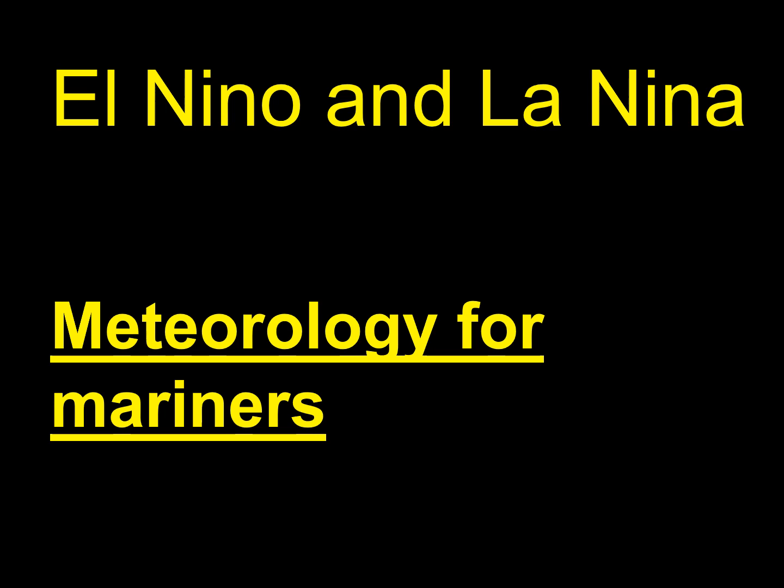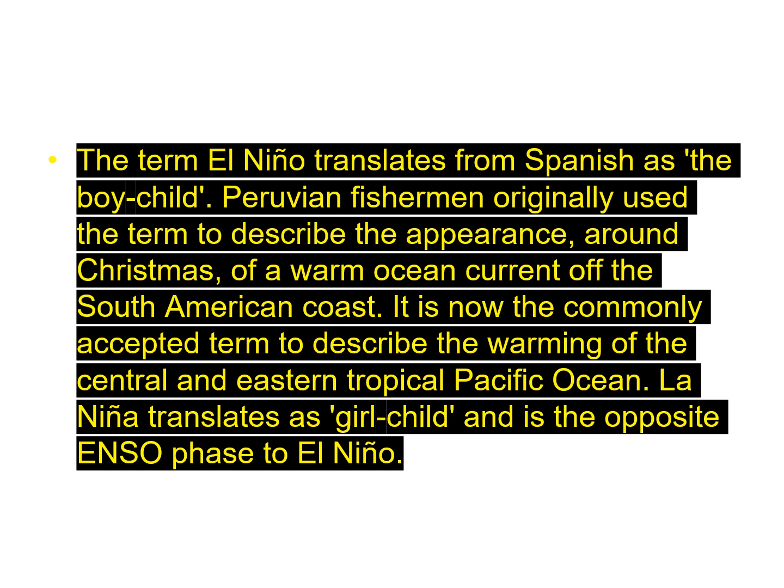In the topic of meteorology for mariners today, I want to explain the terms El Niño and La Niña to mariners who are studying for examinations. The term El Niño translates from Spanish as 'the boy child.' Peruvian fishermen originally used the term to describe the appearance of a warm ocean current off the South American coast, usually around Christmas in December. La Niña, on the other hand, translates to 'girl child' and is the opposite of ENSO relative to El Niño.